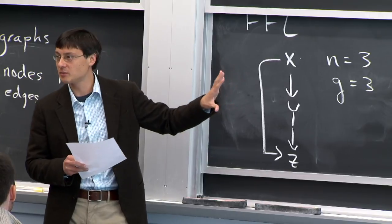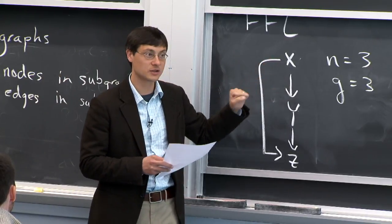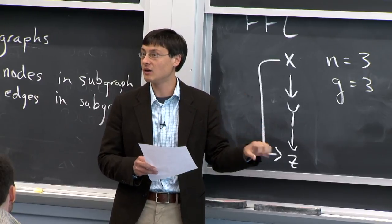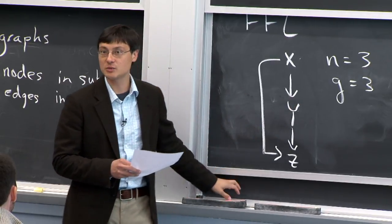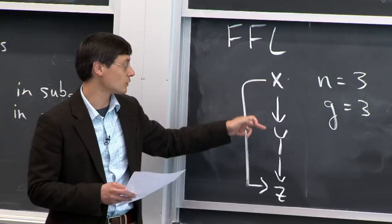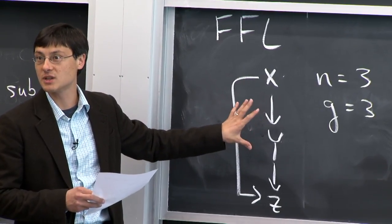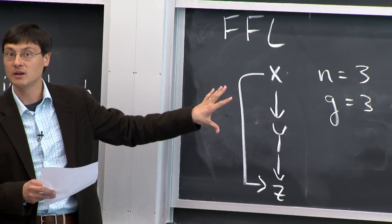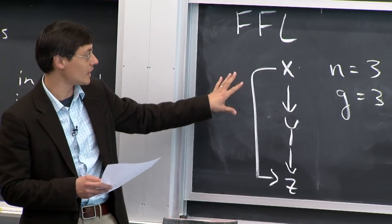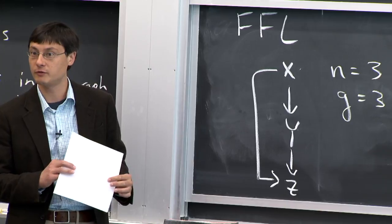When drawing an arrow in the context of a generic subgraph, we're not necessarily saying this is upregulation — x regulates y in one way or the other. This is also how we write the coherent type 1 feed forward loop. But for right now this is just a generic feed forward loop.